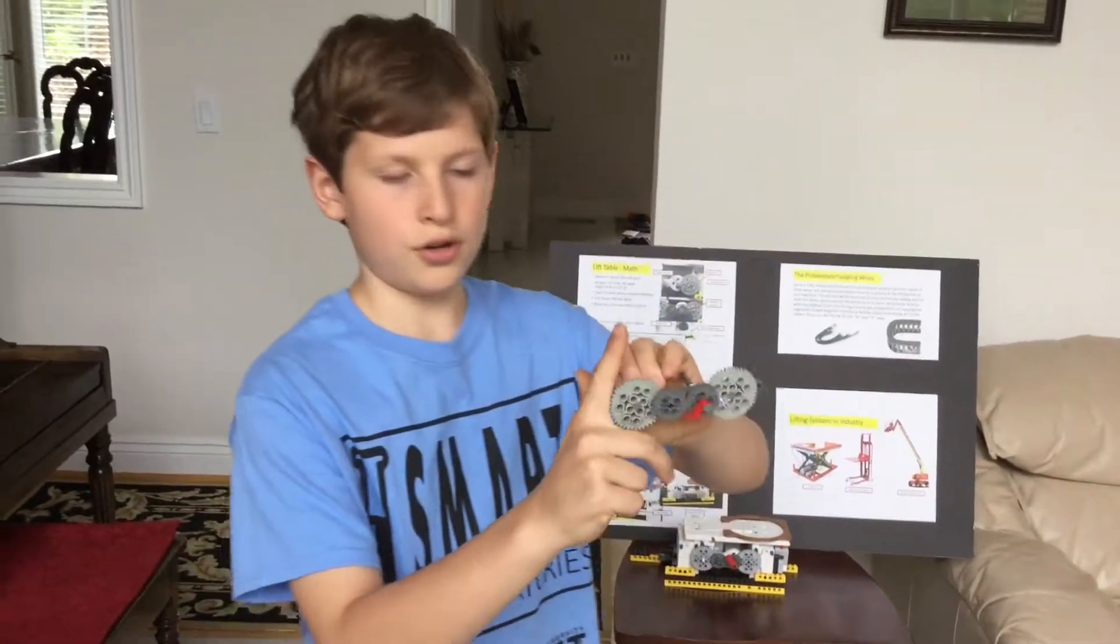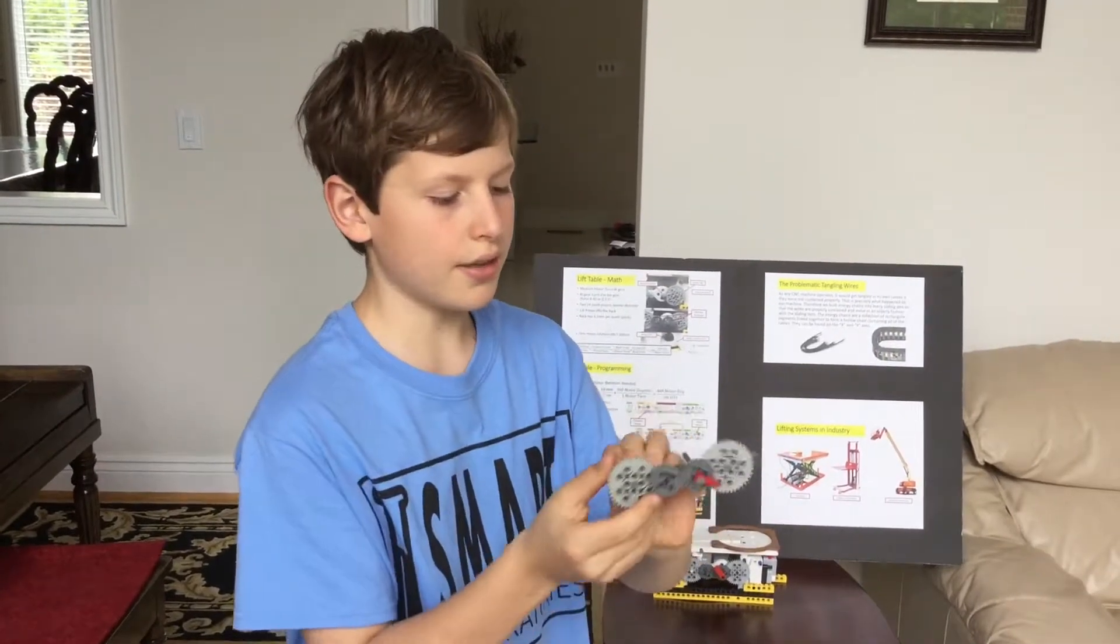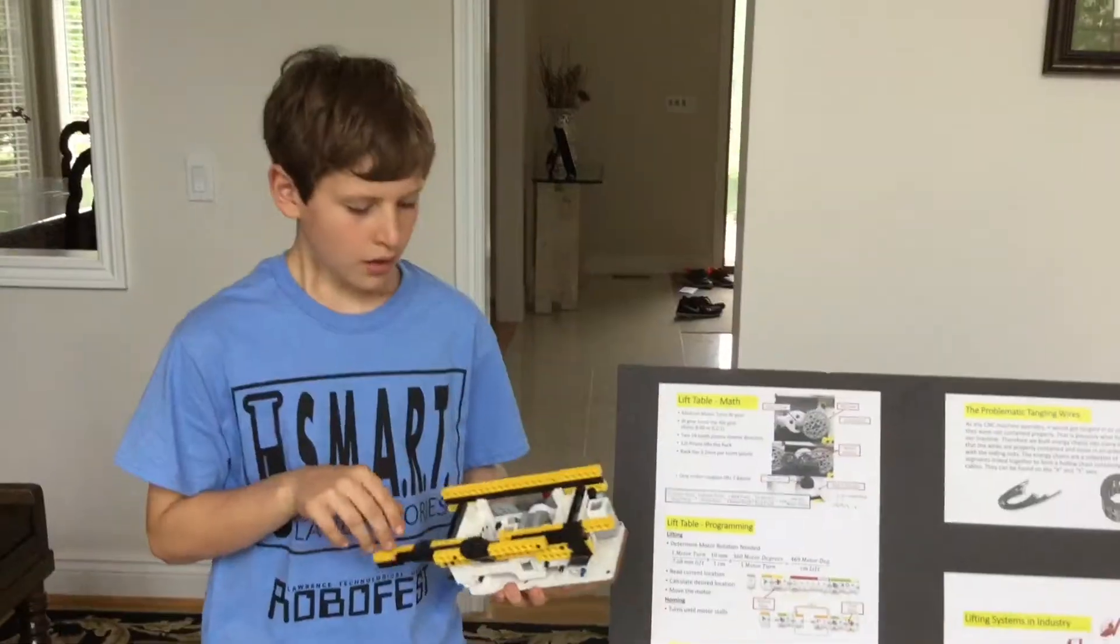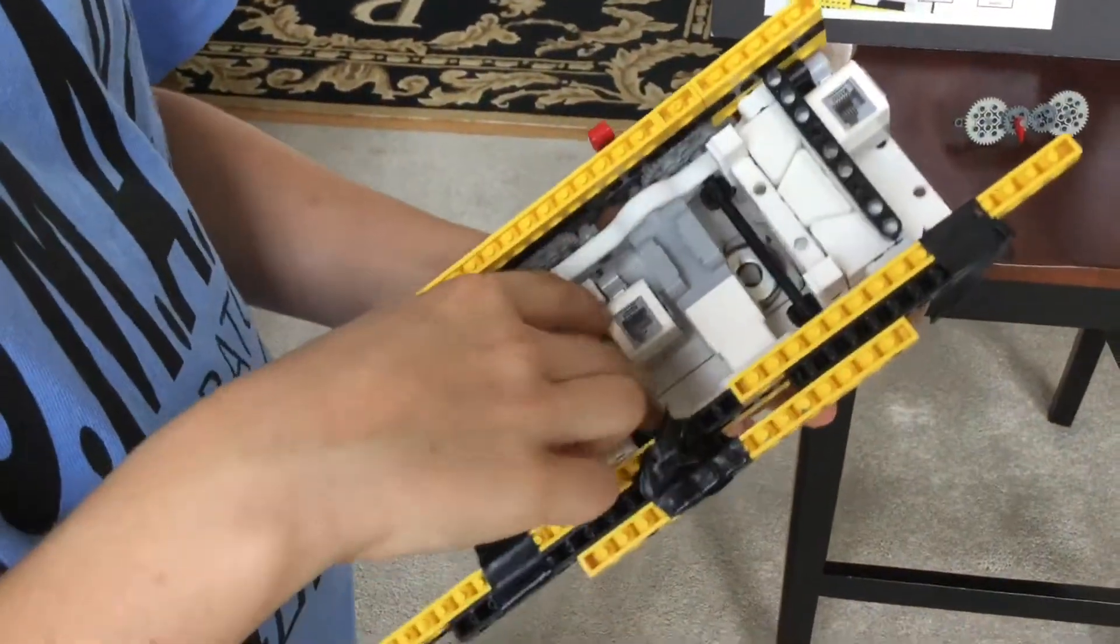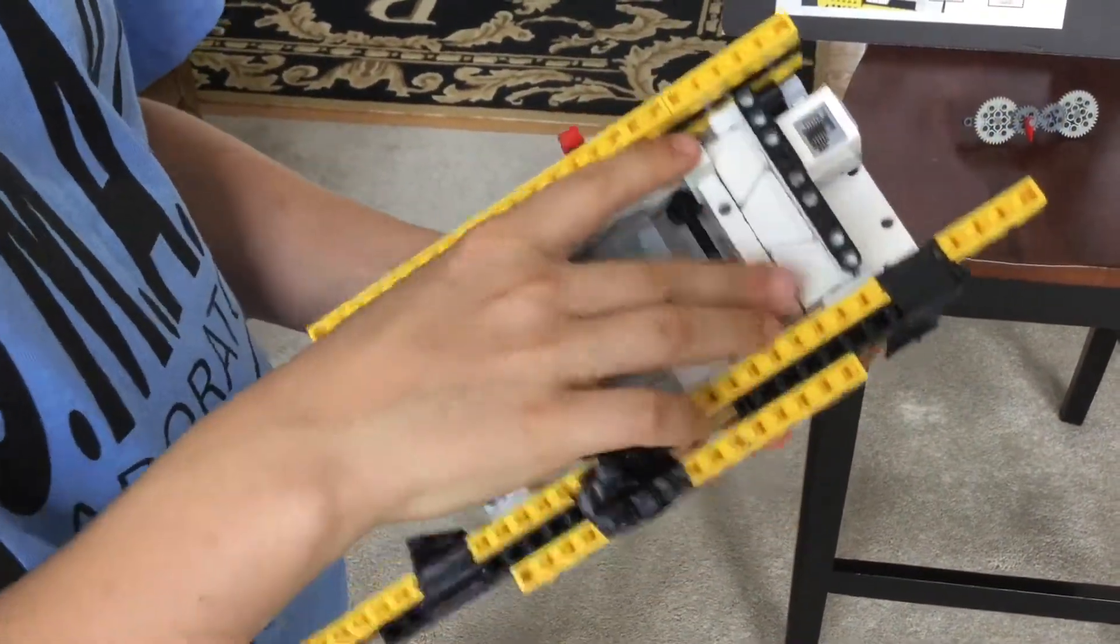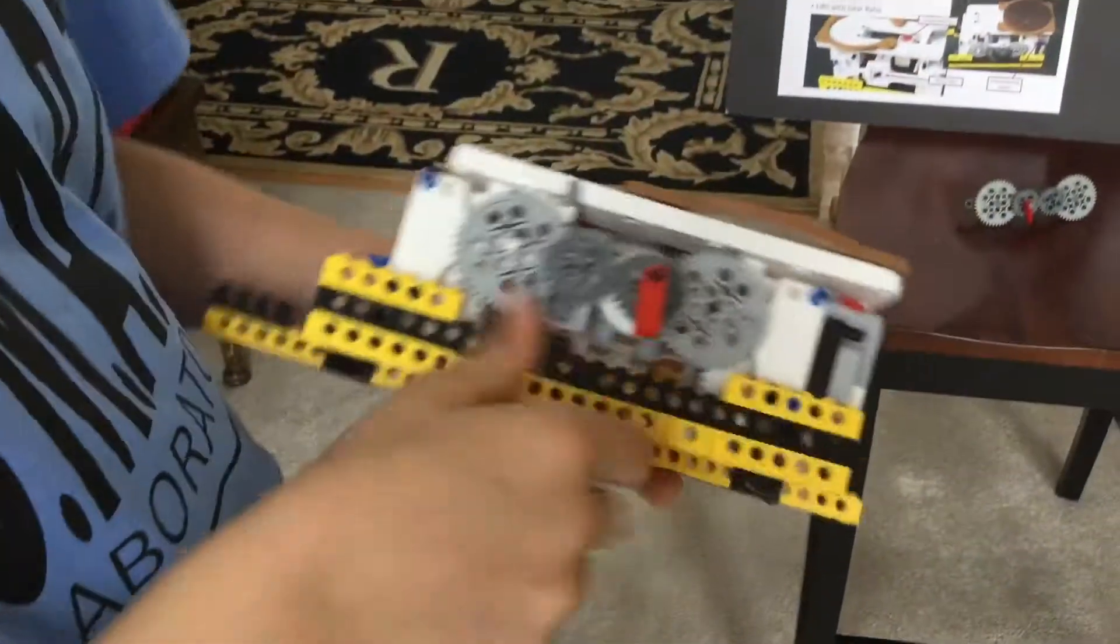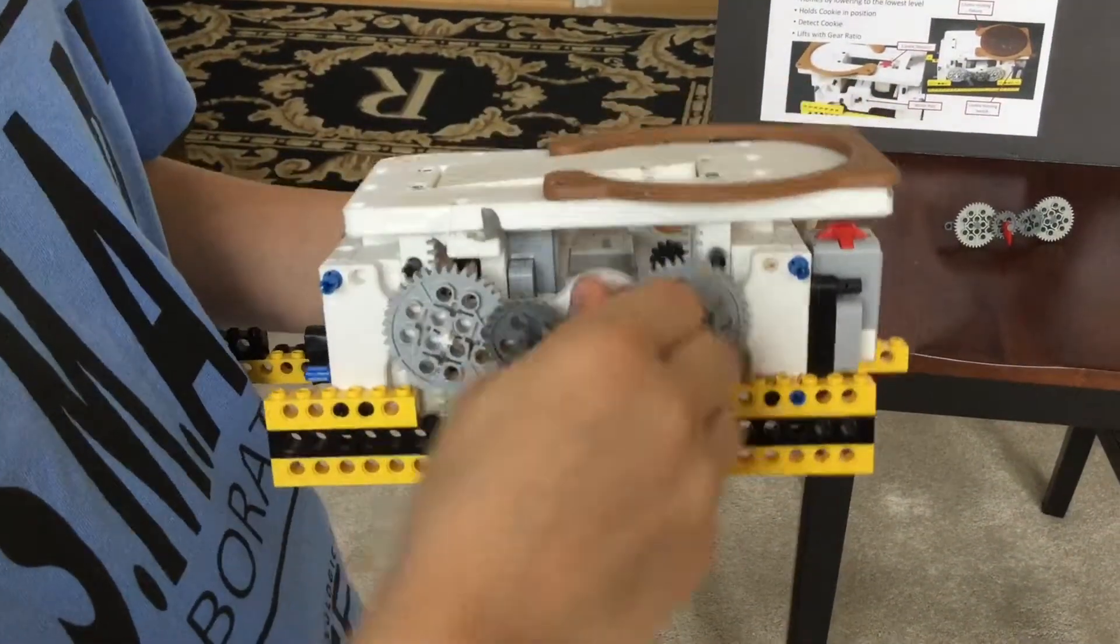This gear right here would turn the rack up, and this gear on this side would also turn the rack up. These four gears turn these racks and lift the lift table like this, and lower it also.